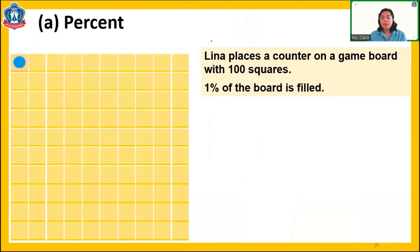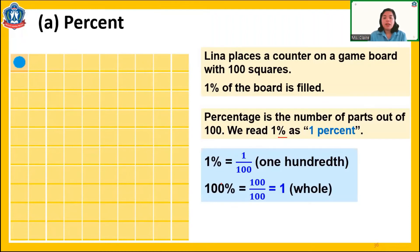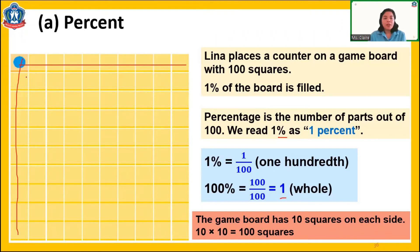Let's study now percent. Percent or percentage means a number out of one hundred. Lina places a counter on a game board with one hundred squares. One square is one percent — so one percent of the board is filled. Percentage is the number of parts out of one hundred. One hundred percent is equal to one hundred hundredths or one whole. The game board has ten squares on each side — ten times ten is one hundred. One part is one percent, ten parts is ten percent, twenty parts is twenty percent, and the whole is one hundred percent.